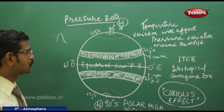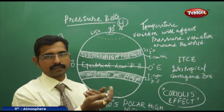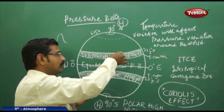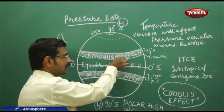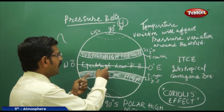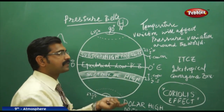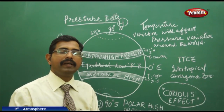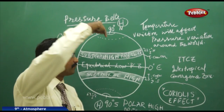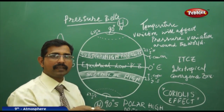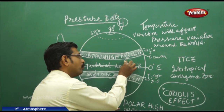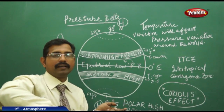Air molecules rising from the earth's surface due to equatorial heat cool down and come back to the surface, striking it and splitting into two parts. Since wind travels from high pressure to low pressure, one part goes back to the low pressure belt — returning to the equator. The other part moves in the opposite direction.